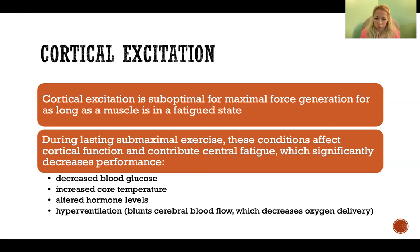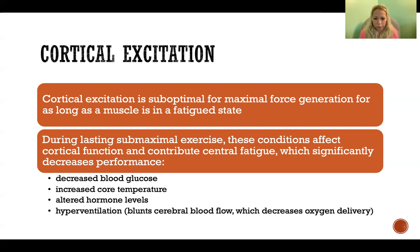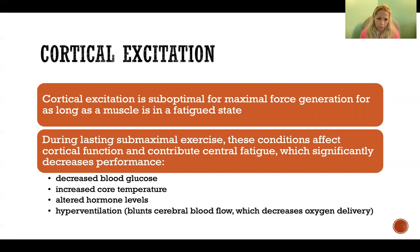During lasting submaximal exercise, over time we experience decreased blood glucose, increased core temperature, changing hormone levels, and sometimes hyperventilation. When we hyperventilate, we blunt cerebral blood flow — the brain is protected from hyperventilation by reducing blood flow to the cerebrum — but as that blunted cerebral flow continues, we have decreased oxygen delivery. All of these states — blood glucose, core temperature, hormones, and hyperventilation — decrease the performance and function of the cerebral cortex where motor programming is generated, contributing significantly to central fatigue and translating to full body fatigue and the sensation of muscle fatigue.